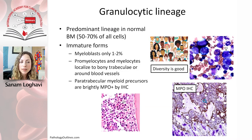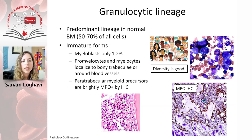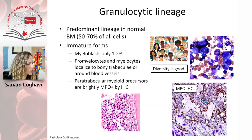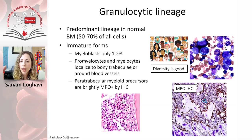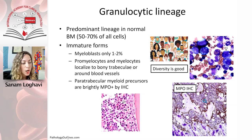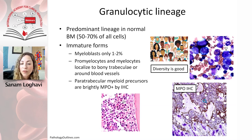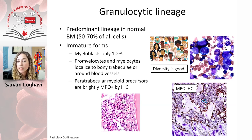The granulocytic lineage is the predominant lineage in any normal bone marrow — about 50 to 70% of cells — maturing from the myeloblast all the way to neutrophil, eosinophil, or basophil. Blasts and promyelocytes are supposed to be close to the bony trabeculae, and as they mature, they move into the intramedullary space. A myeloperoxidase IHC shows MPO-positive cells aggregating around the bony trabeculae. Importantly, you have to have a diverse population of cells — a monotonous population is usually a sign of neoplasia.